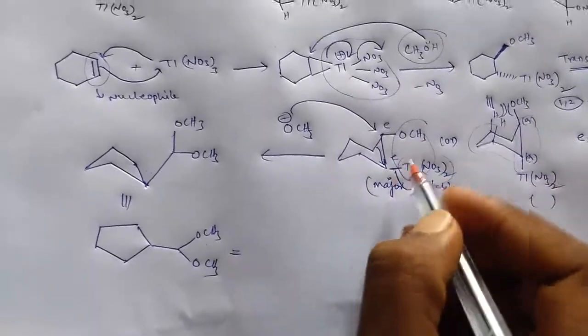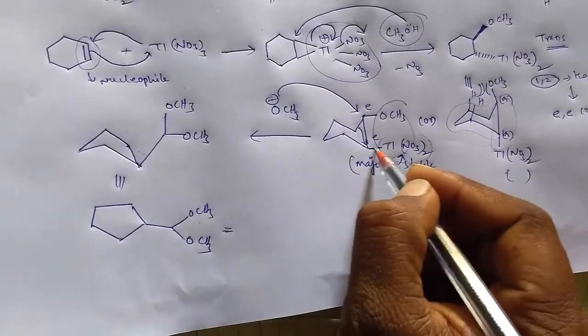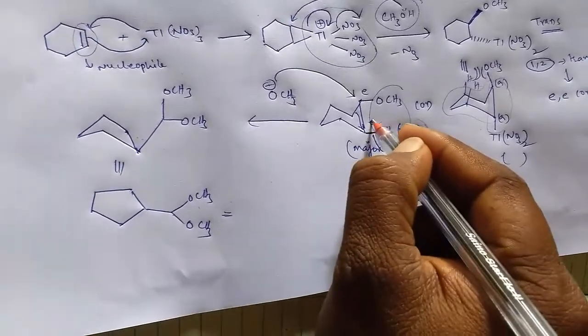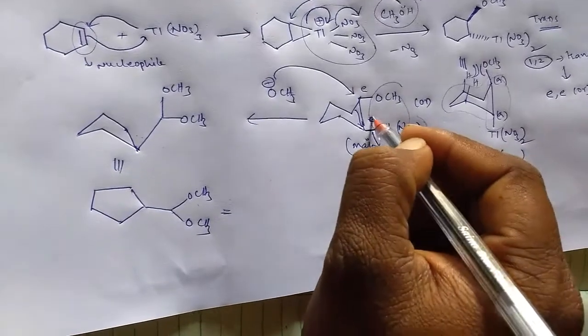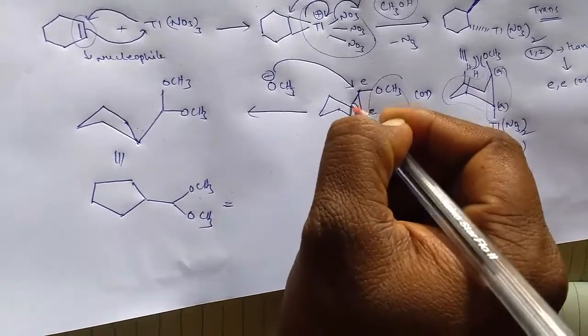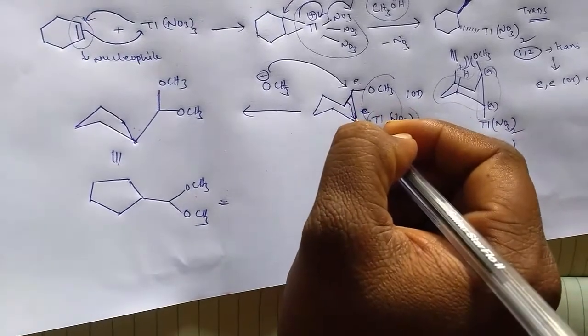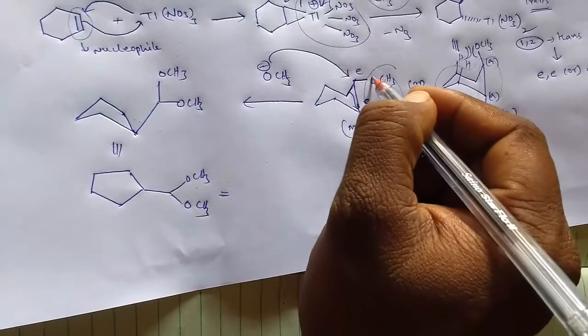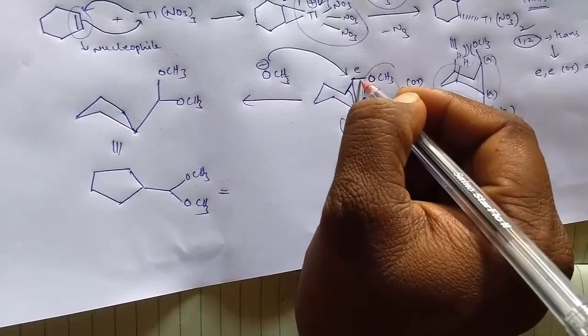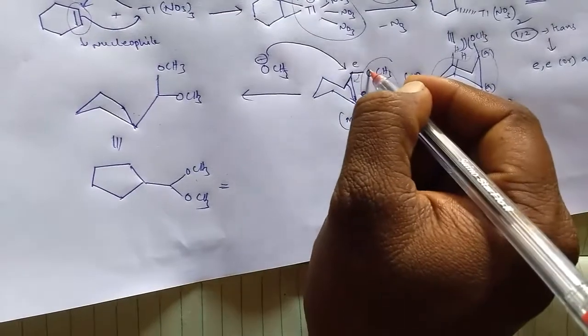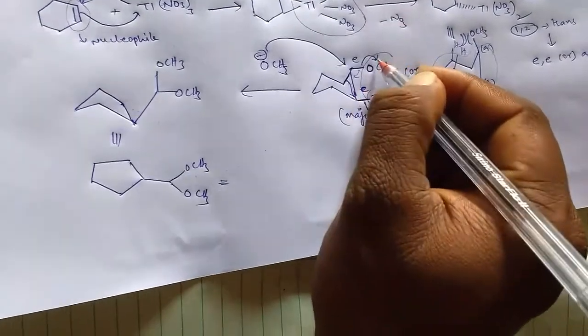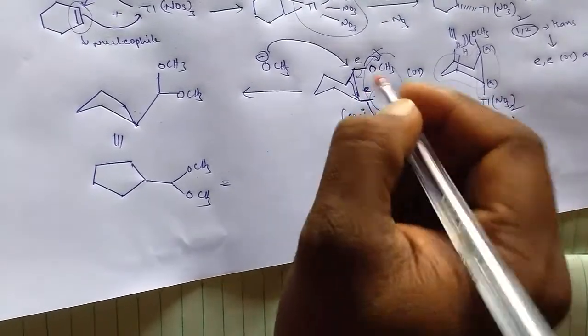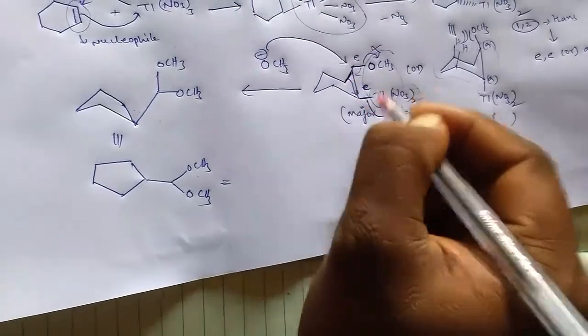If you observe, this is also equatorial. From the axial position, the electrons don't come here because this is more electronegative. It attracts electrons towards it, so that's why it's not part of the elimination.